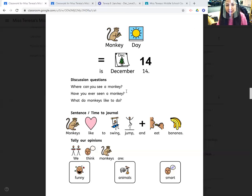And what do monkeys like to do? Well, monkeys like to swing on trees, and they also like to eat bananas. They like to eat, they like to play. So our sentence is: monkeys like to swing, jump, and eat bananas.